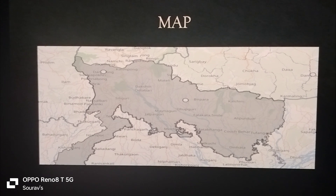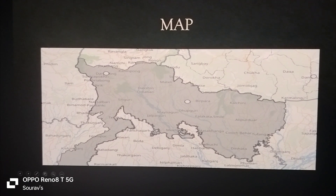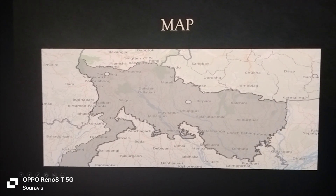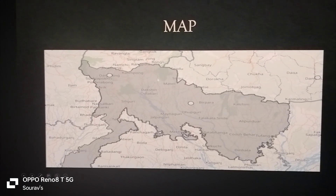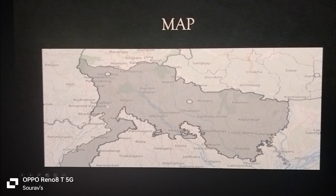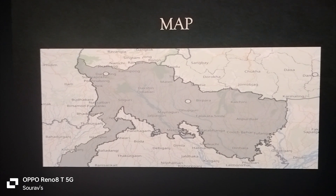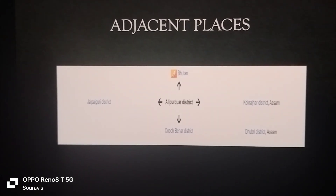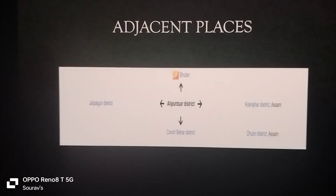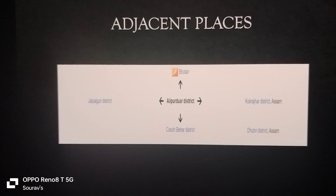You have a map of Jalpaiguri Division, and you can see the 5 districts in Jalpaiguri Division. This area of Jalpaiguri Division spans north, southwest, eastern, south-eastern, northernmost, and southernmost directions.